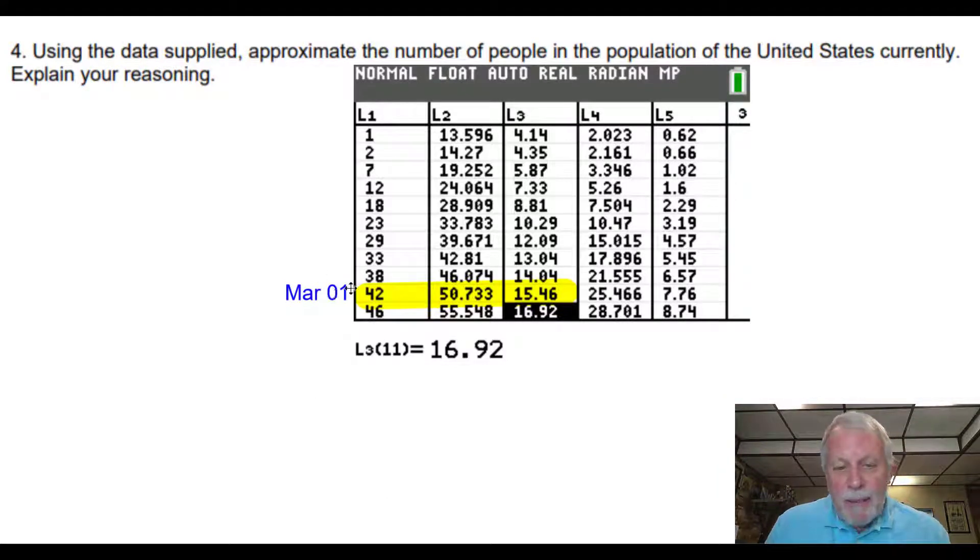So the day I picked right here, I picked March 1st. It's the 42nd day. Nothing special about it. But on this particular day, 50.733 million people are vaccinated with one dose, which is 15.46 percent of the population, the United States population. So I'm going to give you one last chance to use that data to approximate the population of the United States. So pause as needed.